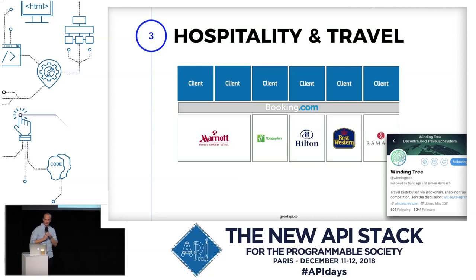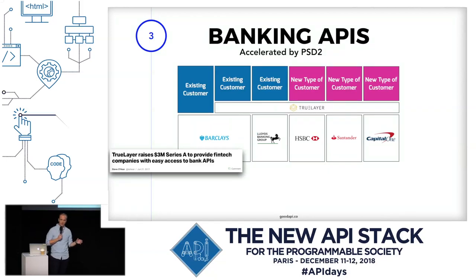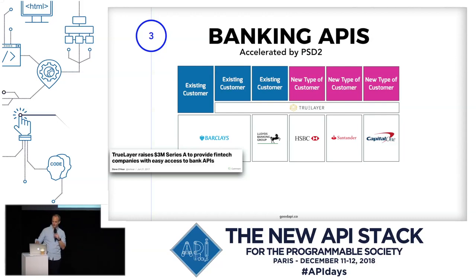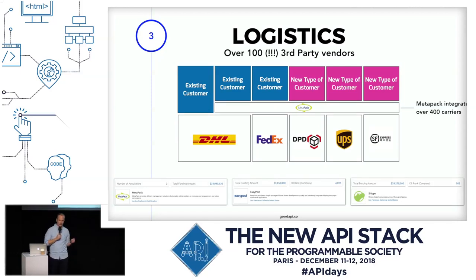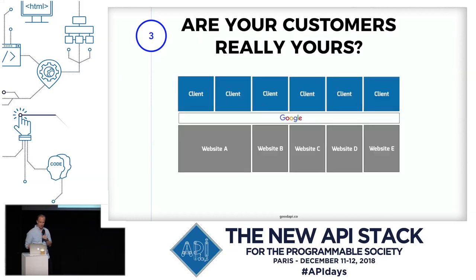One example is hospitality and travel — we know Booking.com is basically the interface to hotels for making orders. Our friends at Windings are trying to change this with a very interesting platform. You can see this in many other domains too: banking — PSD2 accelerated the need for multi-banking. My favorite is logistics: there are around 100 third-party vendors doing nothing but harmonization, providing harmonized access to logistics APIs. They make a very good living by doing so.